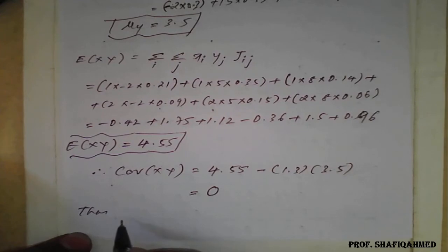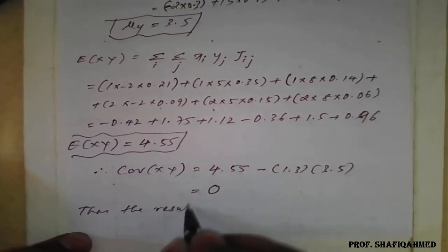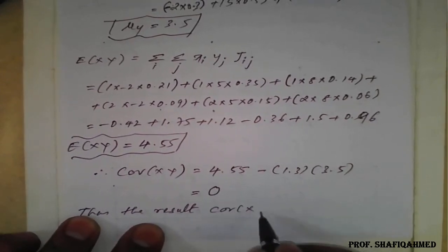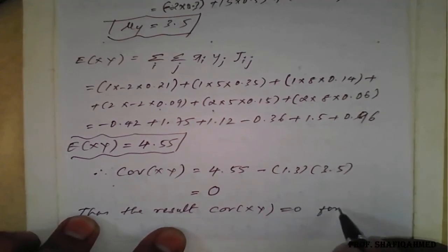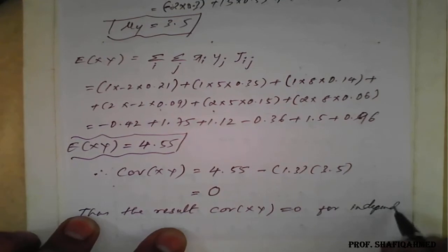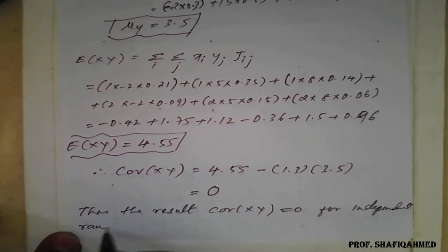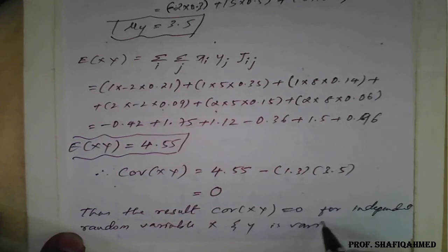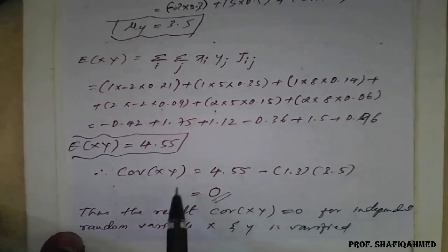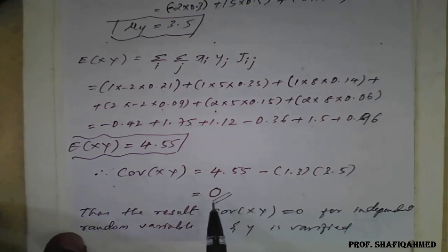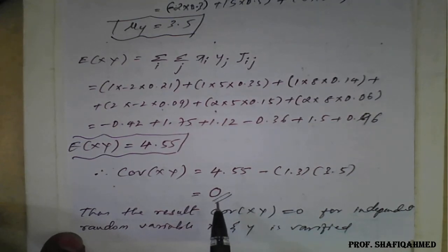Thus we conclude that covariance of x and y is equal to 0 for independent random variables x and y — verified. One more point: if covariance becomes 0, we can say that the two variables x and y are independent. If they are not independent, sometimes covariance may still be 0, but in most cases, if covariance is 0, we can say the variables are independent.